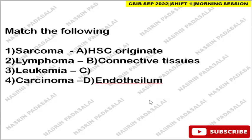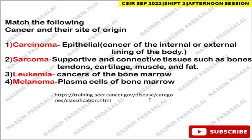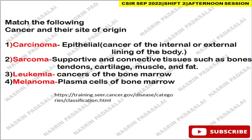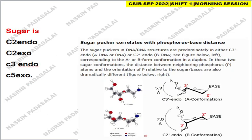The next question is about cancer origin. Carcinoma means cancer originating from epithelial tissue — the inner or external lining of the body. Sarcoma means cancer originating from supportive or connective tissue. Leukemia refers to cancers of bone marrow cells, and melanoma refers to cancers originating from melanocytes. You can refer to the referenced article discussed during the shift 2 question analysis.